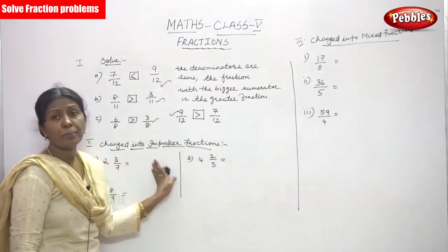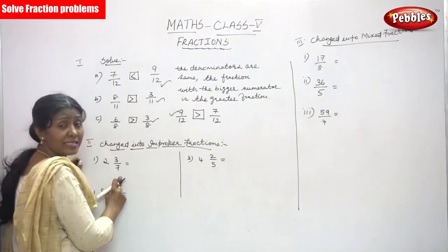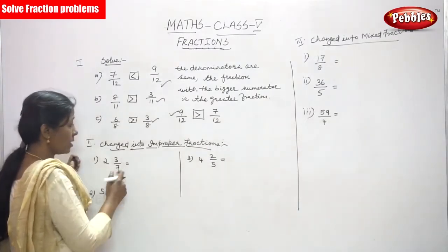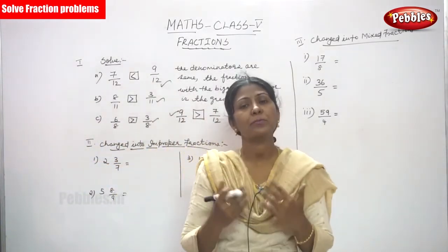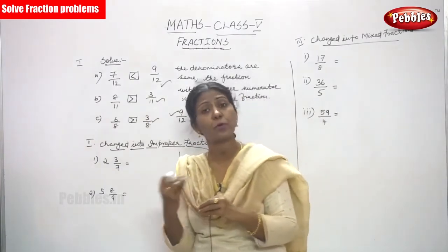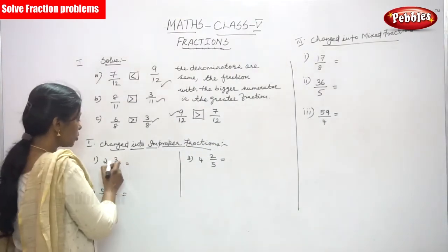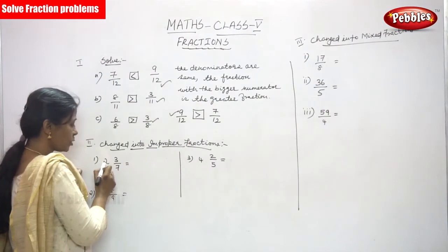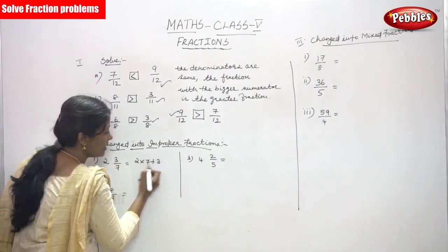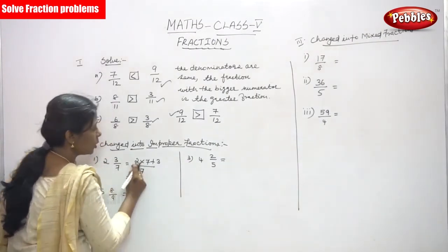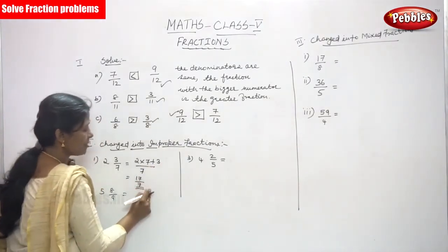Now, change into improper fraction. The first question is 2 3 by 7 — it is a mixed fraction. A mixed fraction is a whole number combined with a proper fraction. Here, 2 is the whole number and 3 by 7 is the proper fraction. To convert: multiply 2 into 7 plus 3, all divided by 7. That gives 14 plus 3 equals 17 by 7. So 17 by 7 is the answer — an improper fraction where the numerator is greater than the denominator.